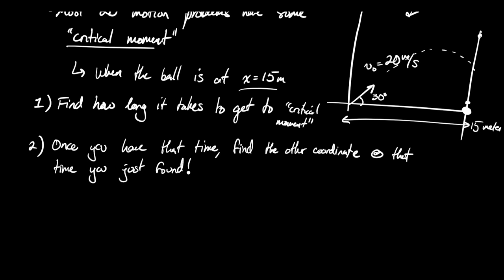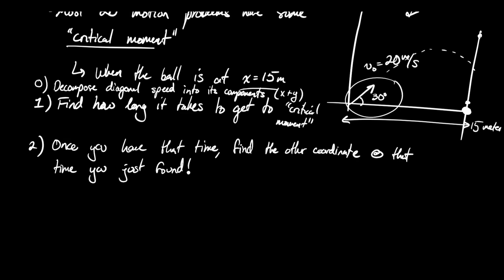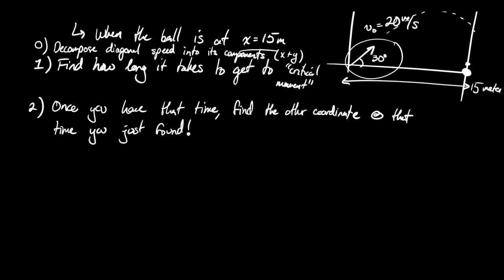There should be a step zero here, because very often we're going to need to decompose a diagonal speed into up-and-down and left-right arrows — also known as decomposing into components, x and y. Just a reminder of how you do this: we have an arrow of length 20 and an angle of 30 degrees. We're asked what are the side lengths of this triangle that recreate the total diagonal speed.